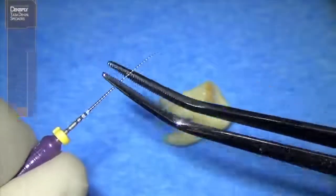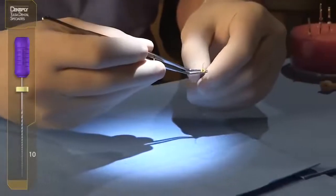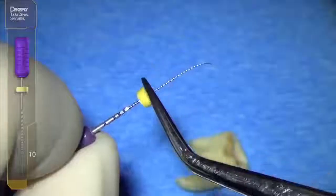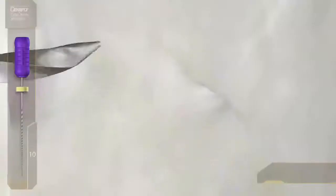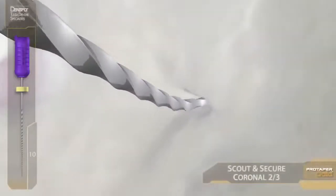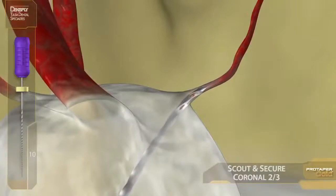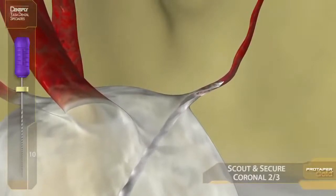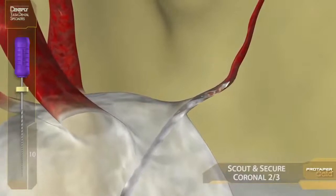We pre-curve a #10 file to make it a SMART file. In a sea of sodium hypochlorite, we slide into the distal buccal simply to explore and investigate. We're not in a hurry — we're looking for booby traps and local knowledge. What we're discovering early is that the dentinal triangle is restrictive.